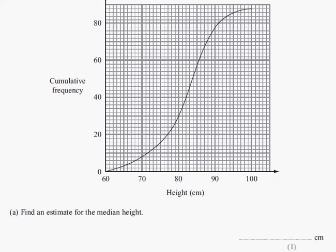So part A says, find an estimate for the median height. Well, you're going to need your ruler, and if you just have a look here, how many plants are there in total?